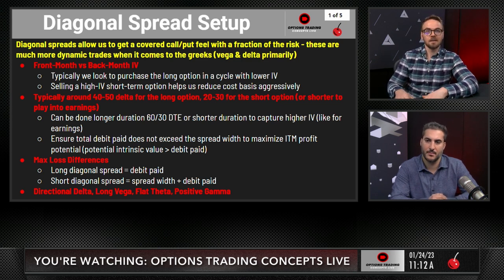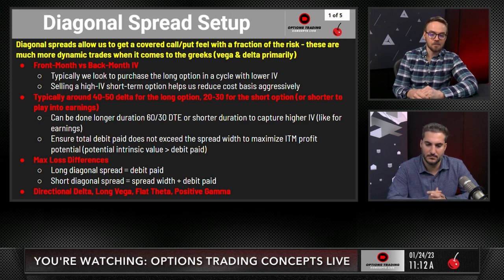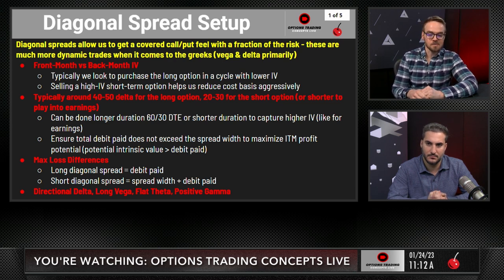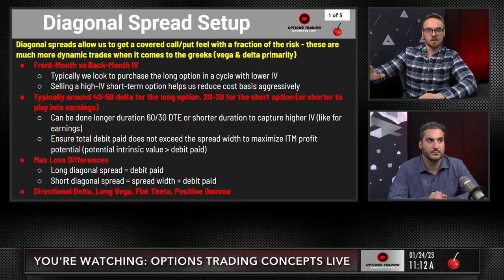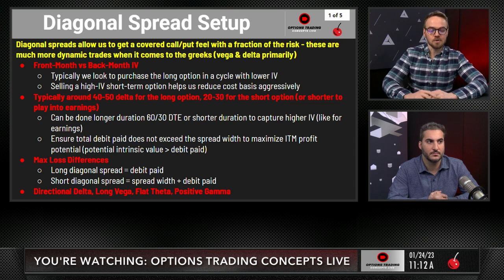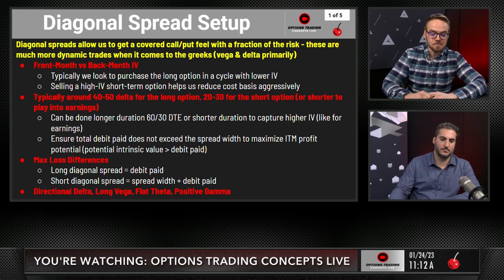We want our long option to have further days to expiration than the short option. Generally speaking, you're also going to be exposed to a lower implied volatility number, especially with earnings setups. Even when we're not looking at earnings, you'll still have more time exposure than implied volatility exposure the further out in time you go with that long option relative to the short-term short option.